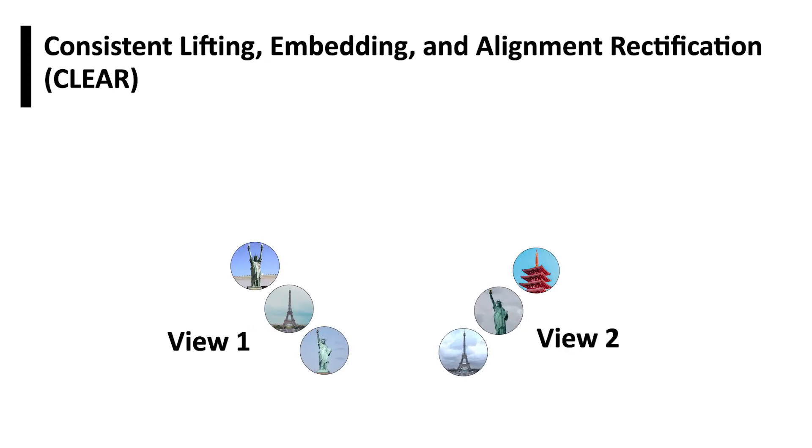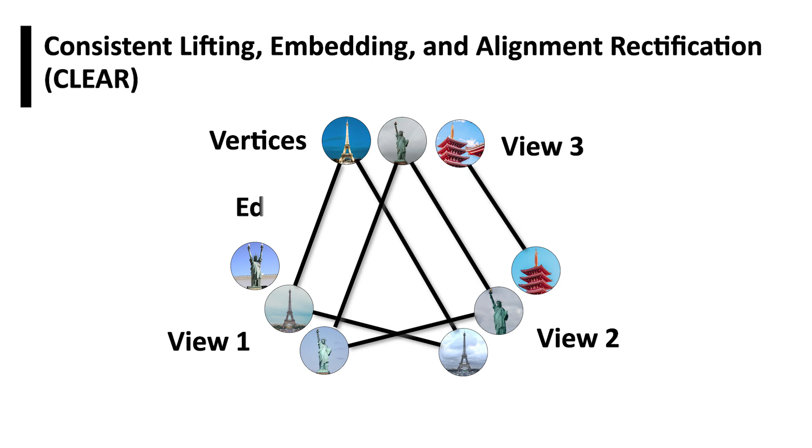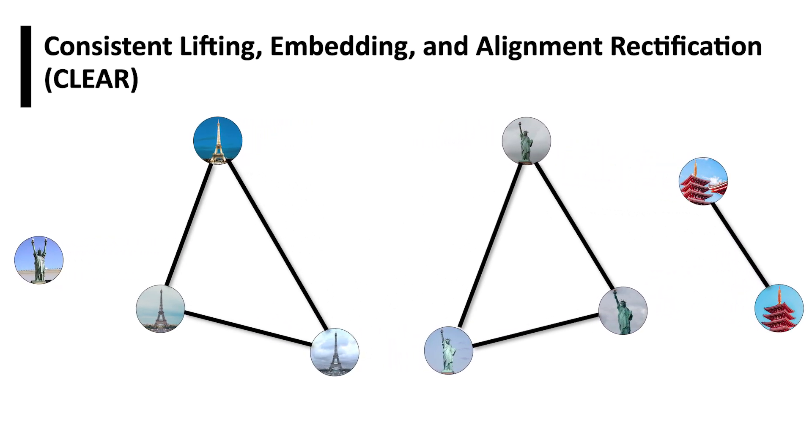CLEAR represents the problem as a graph, where vertices represent items and edges represent associations. When associations are correct, this graph consists of disjoint, fully connected subgraphs.